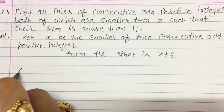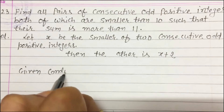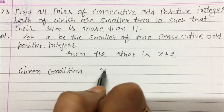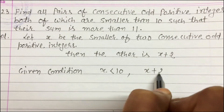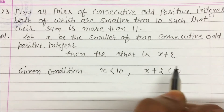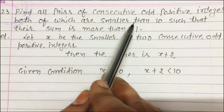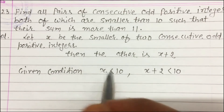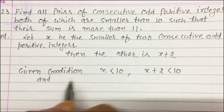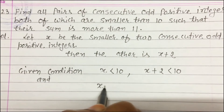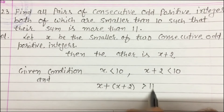According to the given condition, x < 10, and x + 2 < 10 as well — it is given in the question that both are smaller than 10. The second condition is: x + (x + 2) > 11, i.e., the sum of both is greater than 11.